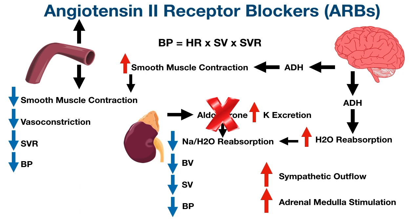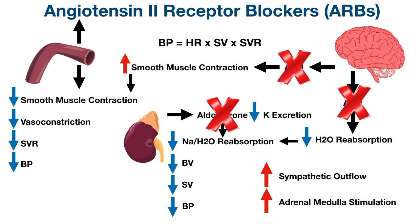With less aldosterone, there will also be less potassium excretion. ARBs also decrease antidiuretic hormone release from the posterior pituitary, which means less water reabsorption in the collecting duct, resulting in decreased blood volume, stroke volume, and blood pressure. Less vasopressin also means less binding to vasopressin receptors on blood vessels, leading to decreased smooth muscle contraction, decreased vasoconstriction, decreased systemic vascular resistance, and decreased blood pressure.